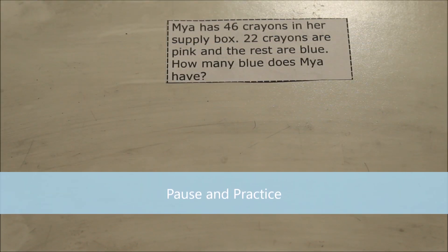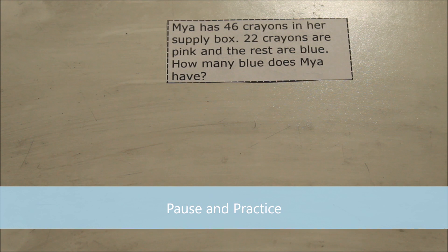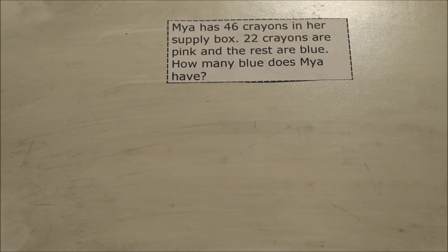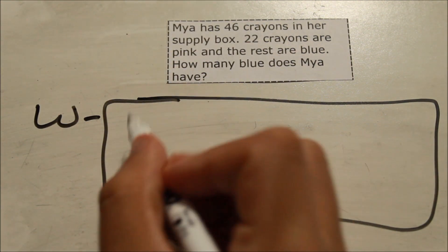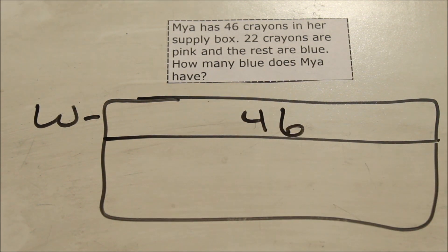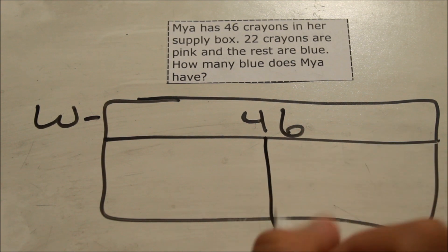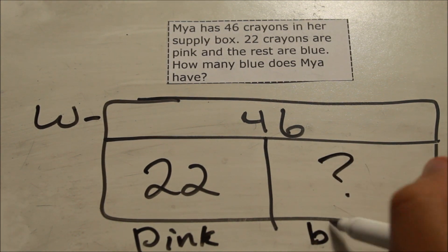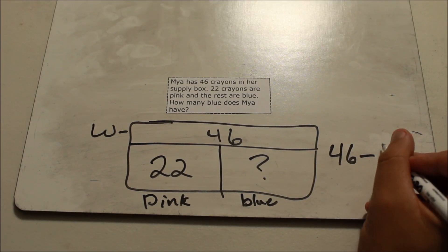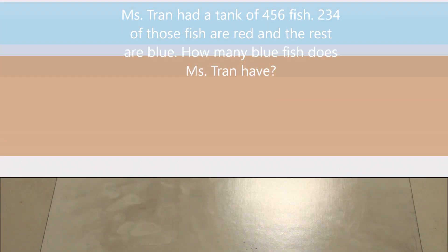Here is your pause and practice. Give it a read and let me know if it is whole unknown or part unknown. Maya has 46 crayons in her supply box; 22 crayons are pink and the rest are blue. How many blue crayons does Maya have? I know she has 46 crayons in total because that's all she has in her supply box. Out of those 46, 22 are pink. I don't know how many blue there are, so I have to do 46 minus 22 and that gives me the final answer.